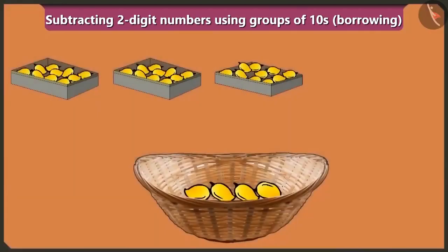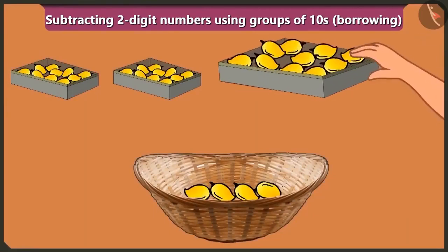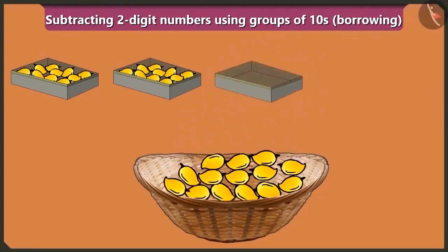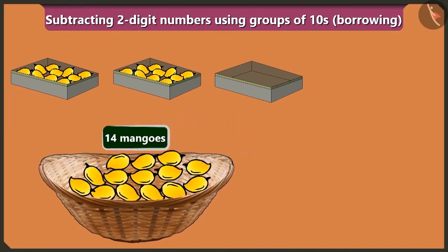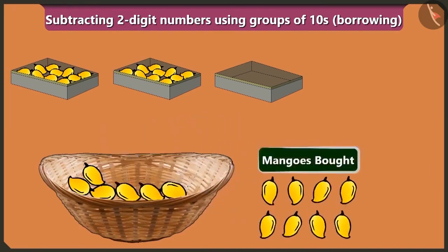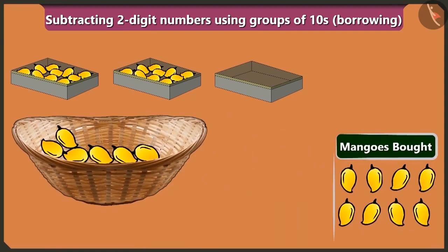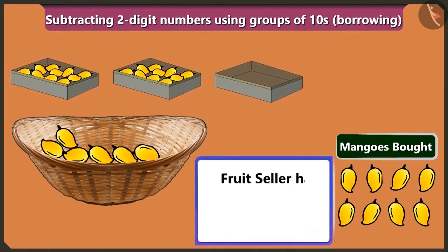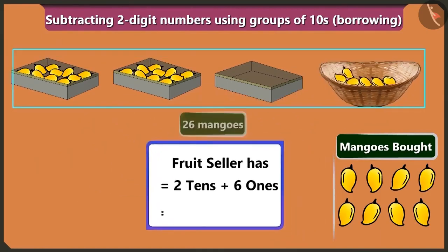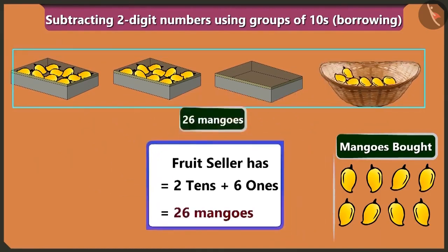Come on, child. I will empty one box of 10 mangoes in this basket. Now there are 10 and 4, which is 14 mangoes in this basket. Bubbly, if you buy 8 mangoes out of the 14 mangoes, how many mangoes would the fruit seller be left with? Mummy, there are 2 boxes of 10 mangoes each, and 1, 2, 3, 4, 5 and 6 mangoes in the basket. So the fruit seller would have 2 tens and 6 ones — means 26 mangoes left.